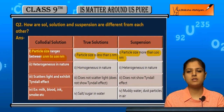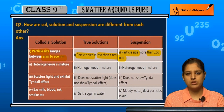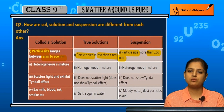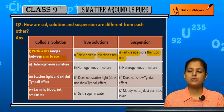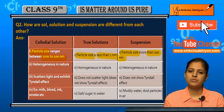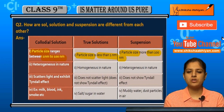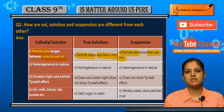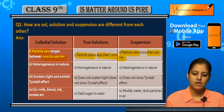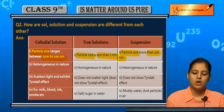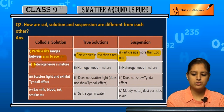So the largest particles are in suspension, the smallest are in true solutions, and intermediate are in colloids. True solution particle size is less than one nanometer, suspension is greater than hundred nanometers, and colloids are between one and hundred nanometers.